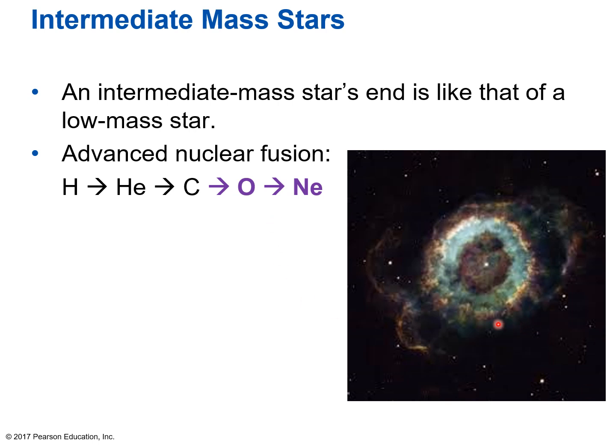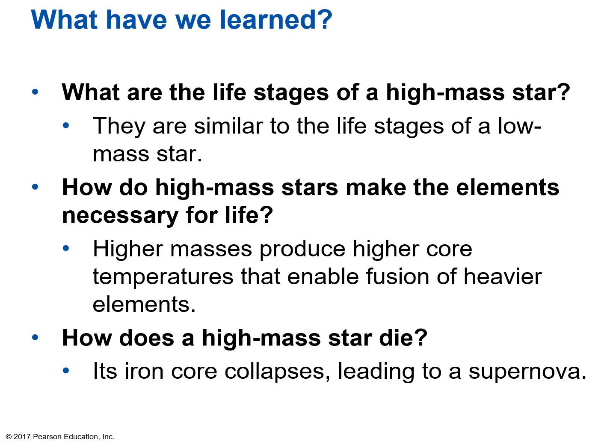Here we have a planetary nebula — the kind you would see from the end of an intermediate-mass star, just like a low-mass star — with the white dwarf visible at its very center, the leftover core of the star. In summary: the life stages of a high-mass star are similar to a low-mass star but with more chapters, fusing heavier and heavier elements. Higher masses produce higher core temperatures enabling fusion of heavier elements. A high-mass star dies when its iron core collapses, leading to a supernova, leaving either a neutron star or, in extreme cases, a black hole.